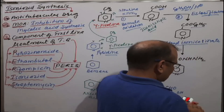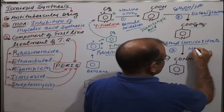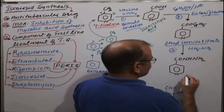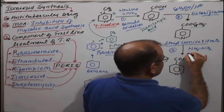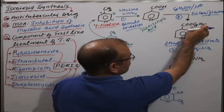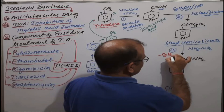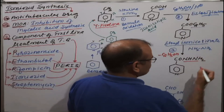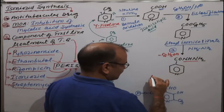This intermediate, ethyl isonicotinate, is then treated with hydrazine — that is reaction number three. In the reaction with hydrazine, a hydrazide is formed. During this reaction, ethanol (C2H5OH) is removed and replaced by the NH-NH2 functional group, forming the hydrazide.